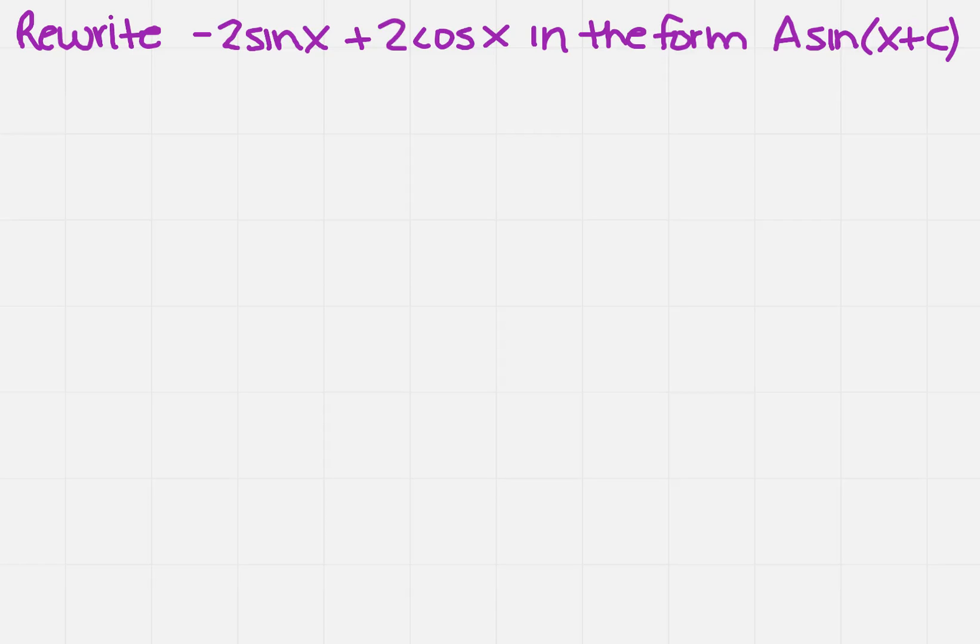Rewrite -2sin(x) + 2cos(x) in the form Asin(x+c). So where do I want to start on that? If you recall, we had a formula that said a times the sine of x plus b cosine of x. Now that resembles what we were given.